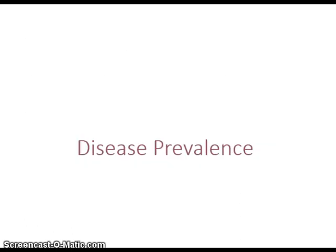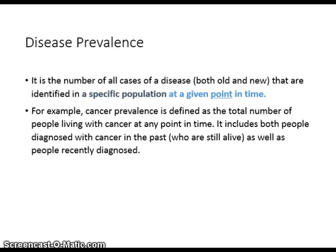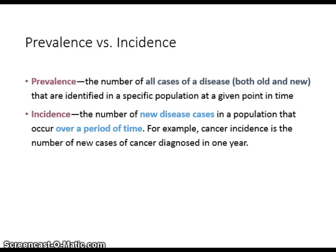Disease prevalence is the number of all cases of a disease, both old and new, that are identified in a specific population at a given point in time. For example, cancer prevalence is defined as the total number of people living with cancer at any point in time — it includes both people diagnosed with cancer in the past who are still alive, as well as people recently diagnosed. Incidence is the number of new disease cases in a population that occur over a period of time. For example, cancer incidence is the number of new cases of cancer diagnosed in one year.